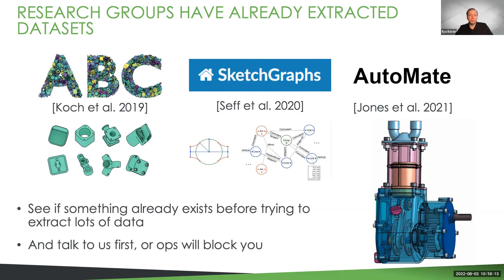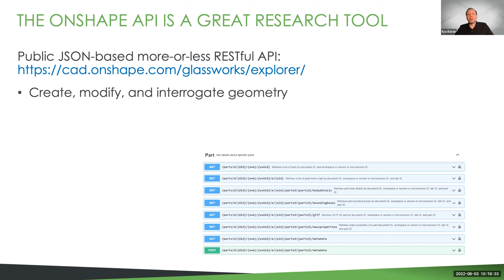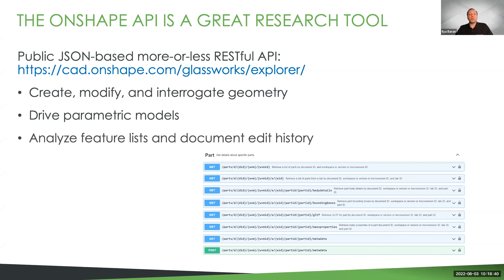An important tool in using Onshape for research is our REST API. It's powerful, though not all areas are equally well supported. It does allow you to look at a parts studio or an assembly, modify it, ask for mass properties and measurements, regenerate parts in different configurations, see how the feature list fits together or what the sequence of edits a user made to a given document was. It lets you export data, or you can create a custom application to interface with another system or enlist the help of our users to test your work.